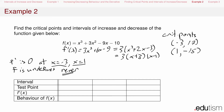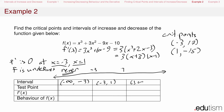Now I'll use the critical numbers -3 and 1 to divide up the x-axis into intervals. The first interval is from negative infinity to -3, the second interval is from -3 to 1, and the third interval is from 1 to infinity.